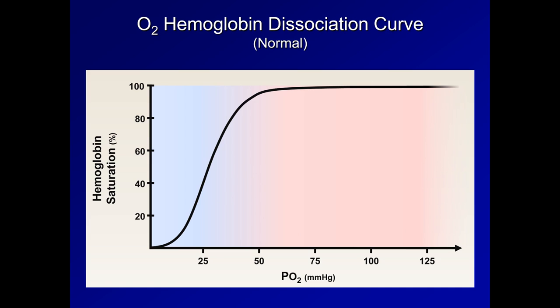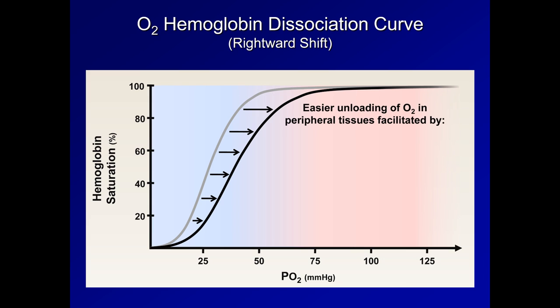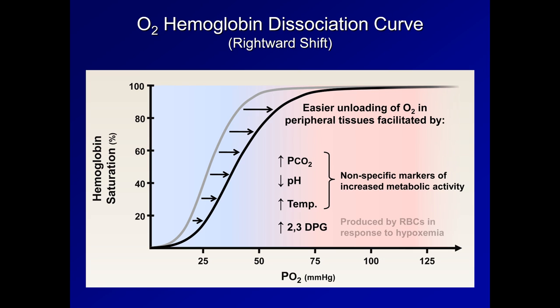The oxygen hemoglobin dissociation curve is not static, but can be altered by a number of physiologic changes in blood. For example, the curve can be shifted to the right in which hemoglobin saturations will be lower at the same PaO2. This actually facilitates easier unloading of oxygen in peripheral tissues. The four major causes of a rightward shift are increased pCO2, decreased pH, increased temperature, and increased concentration of a compound called 2,3-DPG. The first three are nonspecific markers of increased metabolic activity, and 2,3-DPG is produced by red blood cells in response to hypoxemia. In other words, these effects are quite advantageous.